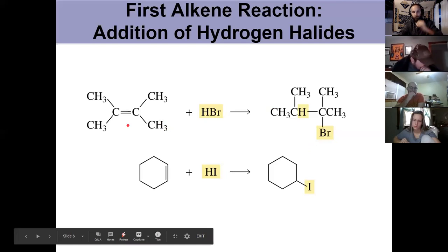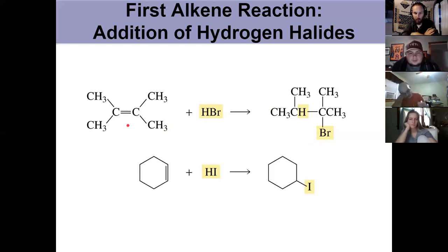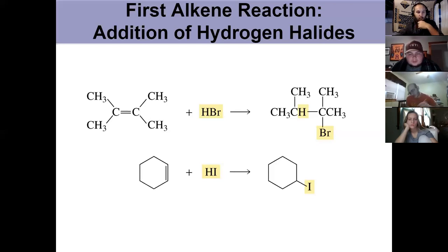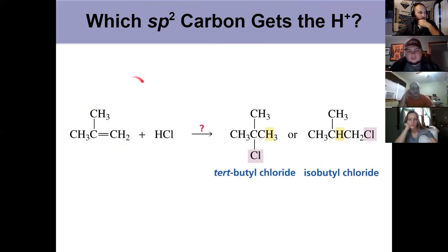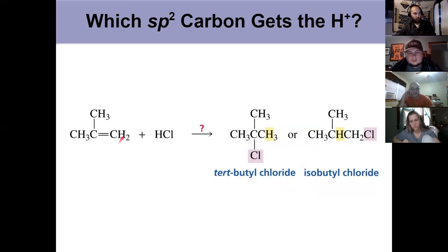The question going forward is: what if the alkene isn't symmetrical? Take an asymmetric alkene — no longer symmetrical about the double bond — where one carbon has two hydrogens and the other has two methyl groups. Depending on where you put the H and the Cl, you get two different products: either tert-butyl chloride (Cl added to the more substituted carbon) or isobutyl chloride (Cl added to the less substituted carbon).